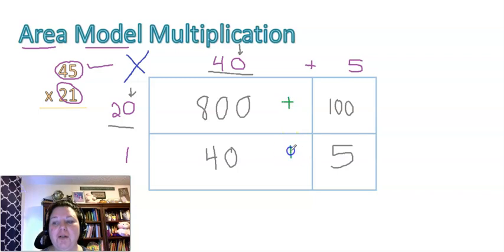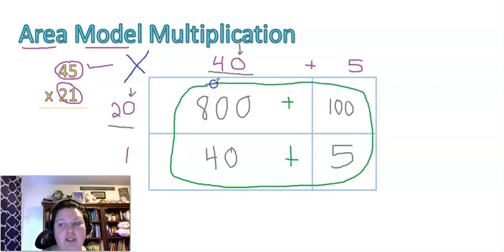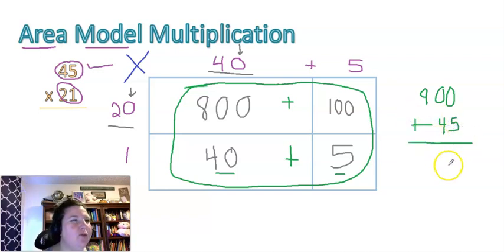Add all these numbers up inside the box that we just created. So 800 plus 100, that's 940. 40 plus 5 is 45. Let's add that up. Students, 940 plus 45, 945.